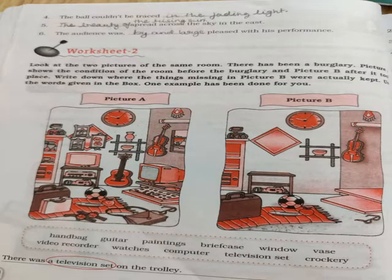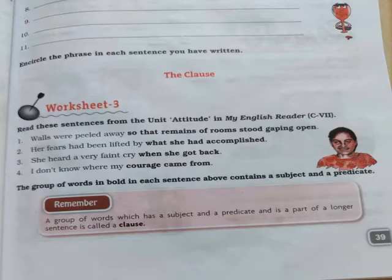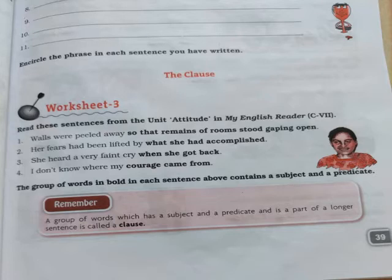In worksheet 2, two pictures A and B are given to you. They are pictures of the same room. There has been a burglary. Picture A shows the condition of the room before the burglary and picture B shows it after. You have to write down the things that are missing in picture B. One example is given: 'There was a television set on the trolley.' Similarly, you will write: 'There were some paintings hanging on the wall.' Like this, you will complete the full exercise.